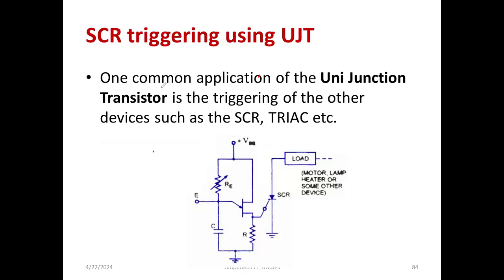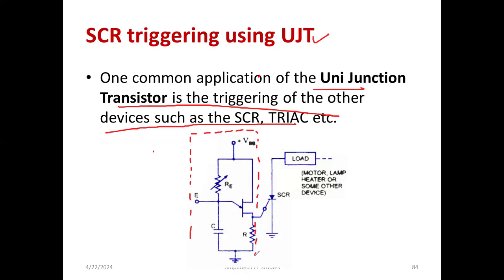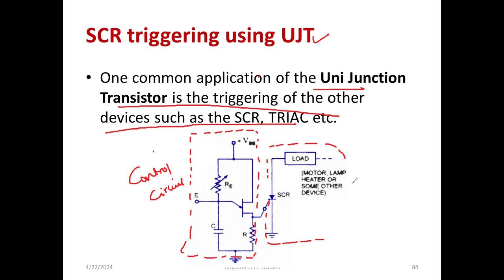One important application is that you can turn on SCR using UJT. One form of application of the unijunction transistor is to trigger control devices such as TRIAC, SCR, etc. We have the UJT circuit — this circuit is known as the control circuit, because we will be producing small signals required to turn on the SCR. SCR requires gating pulses to turn on. This other part is known as the power circuit, associated with the load — it may be motor control, a heater, or some other application. In between, we should have some isolation.